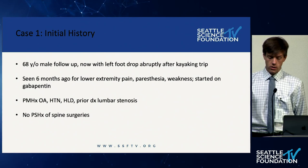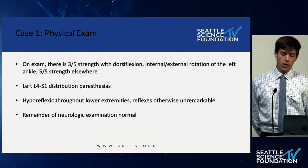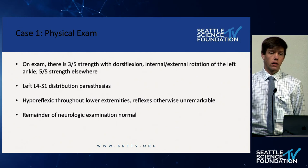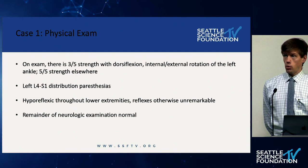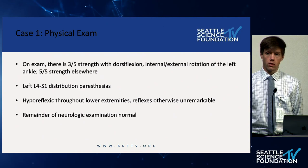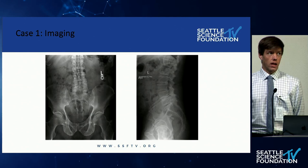On exam he has some weakness, specifically three out of five strength with dorsiflexion, both internal and external rotation on the left. He has full strength elsewhere. He also has paresthesias in the distribution of L4, L5, S1, and he's hyporeflexic throughout the lower extremities. He has normal reflexes in the upper extremities and the remainder of the neurologic exam is normal.